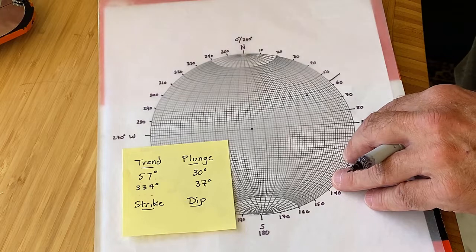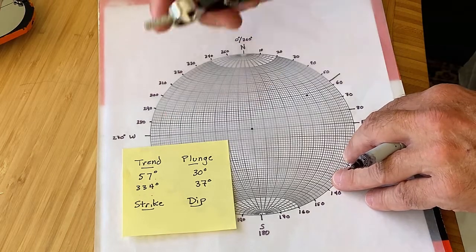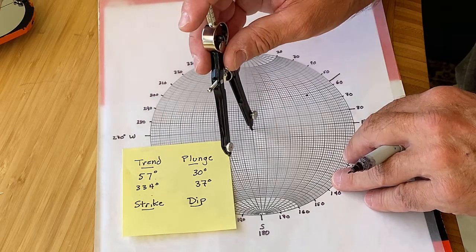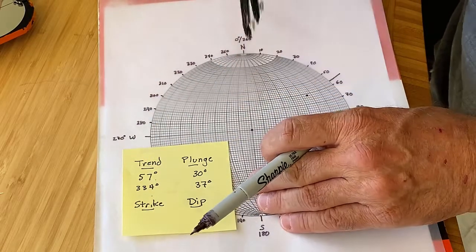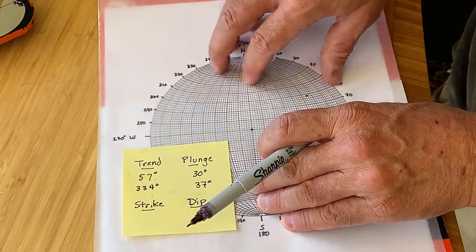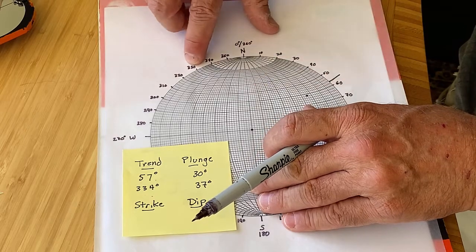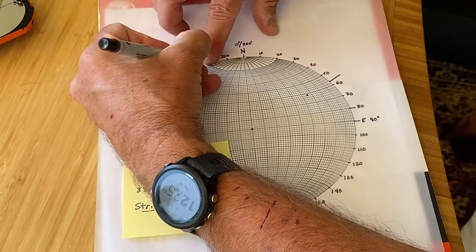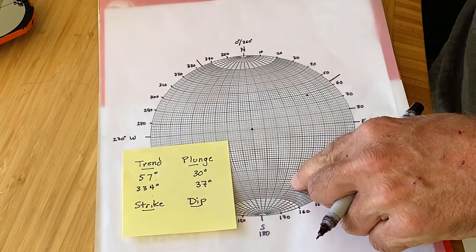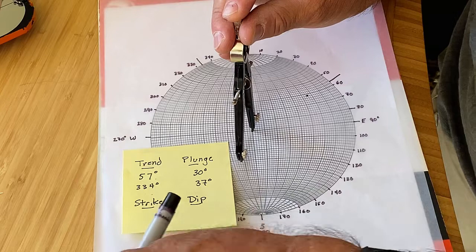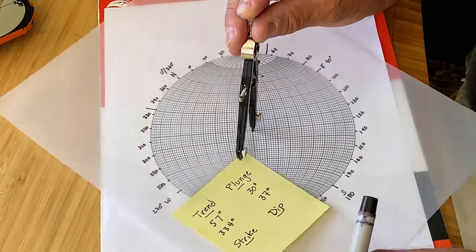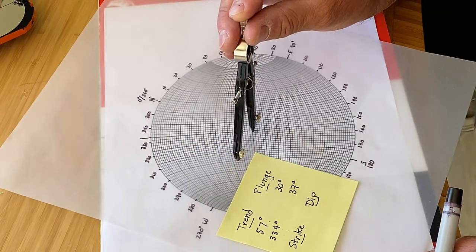Okay, so now we have another trend and plunge line as well. So 334 degrees—we can figure out where that intersects the edge of this. Here's 330 degrees for example, so 334 is right here. And again, to figure out where the plunge is—that's 37 degrees—we rotate this around.